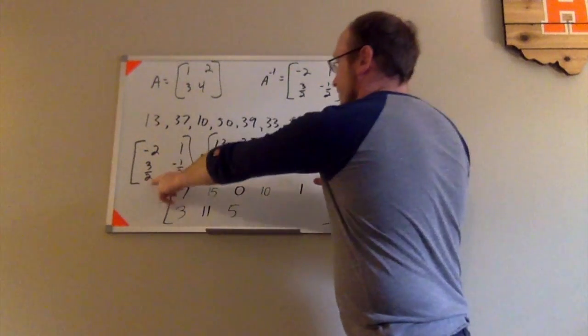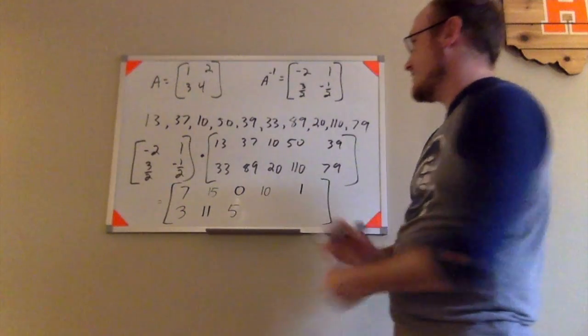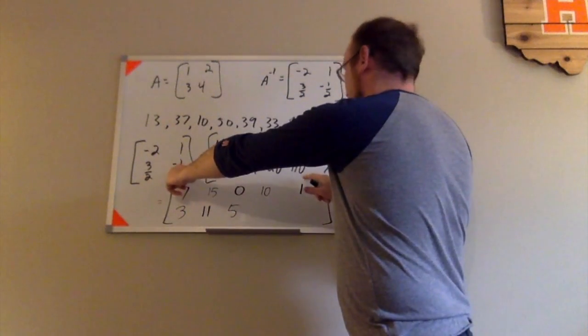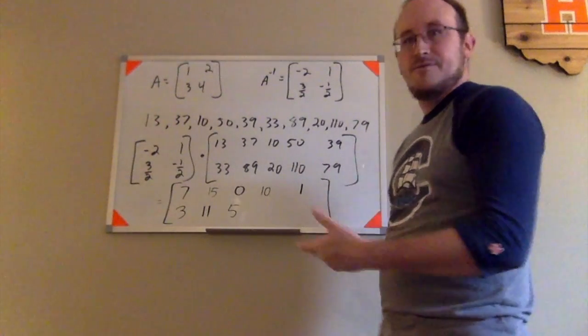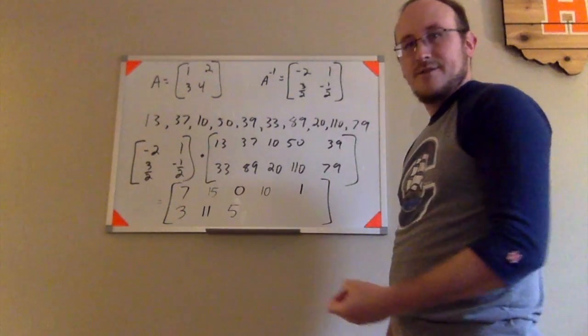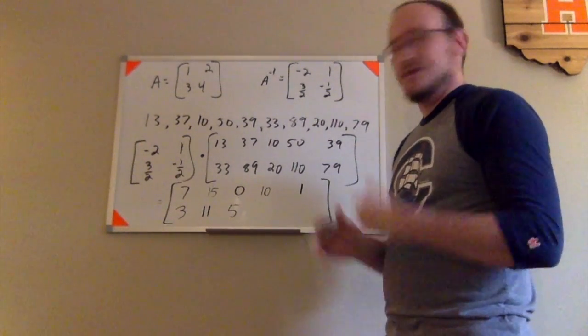Next one, I have 3 halves times 50, which makes 150 halves. Negative 1 half times 110 makes negative 110 halves. 150 halves and negative 110 halves makes 40 halves. 40 over 2, which is 20.